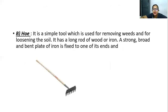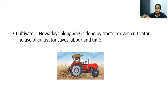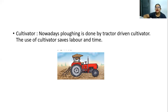The next tool is the hoe — a simple tool used for removing weeds and loosening the soil. It has a long rod of wood or iron with a strong broad bent plate of iron fixed to one end. Any single person can handle it to slowly level the soil and remove unwanted plants or weeds. The third tool is the cultivator, which is directly attached to the tractor. The use of the cultivator saves labor and time.